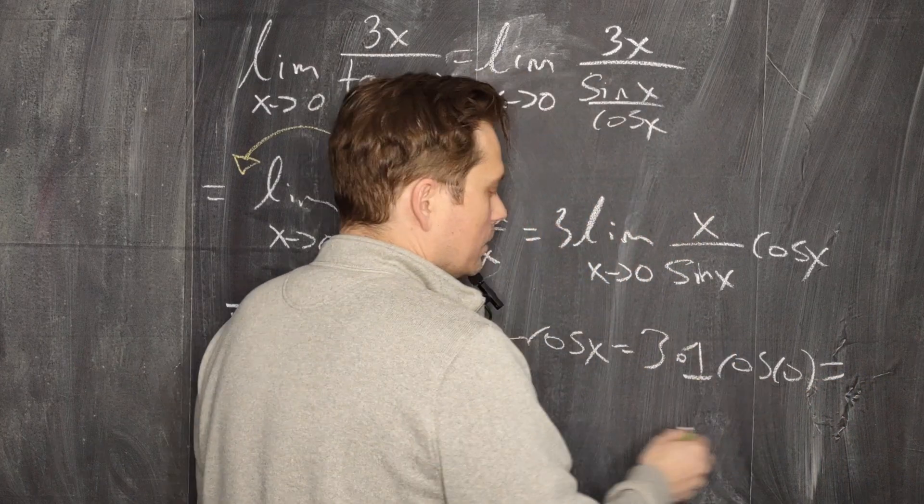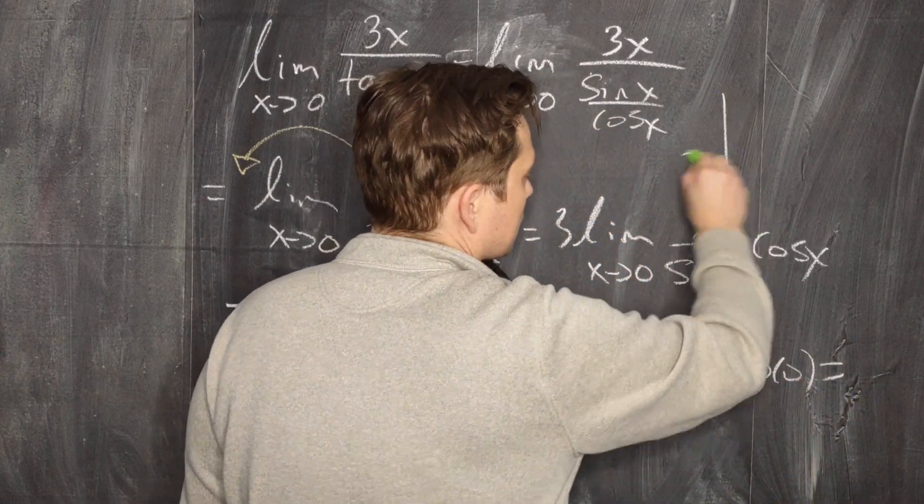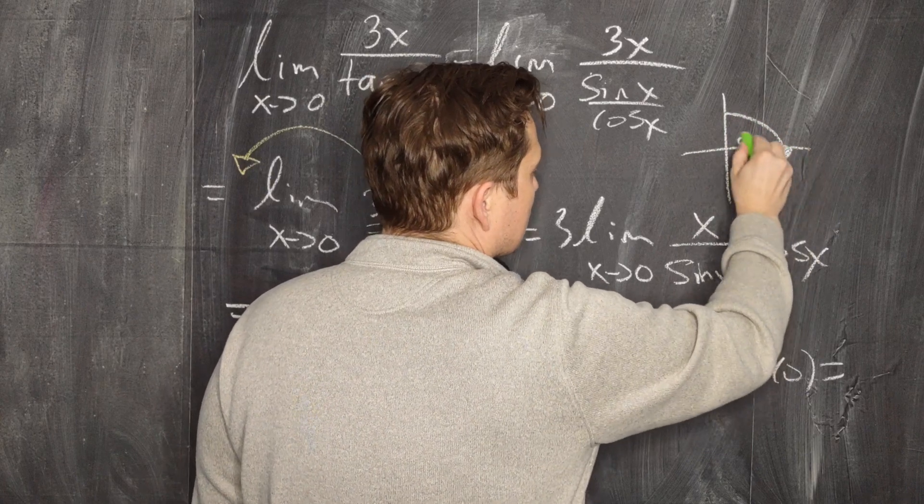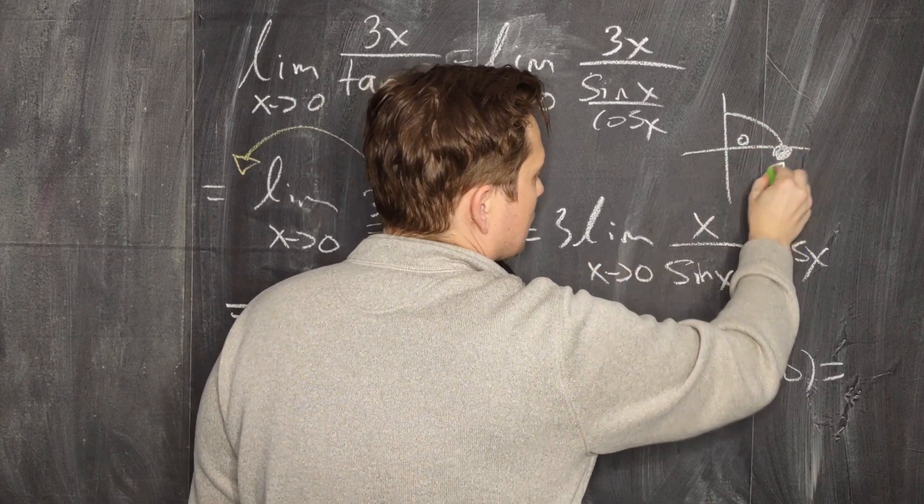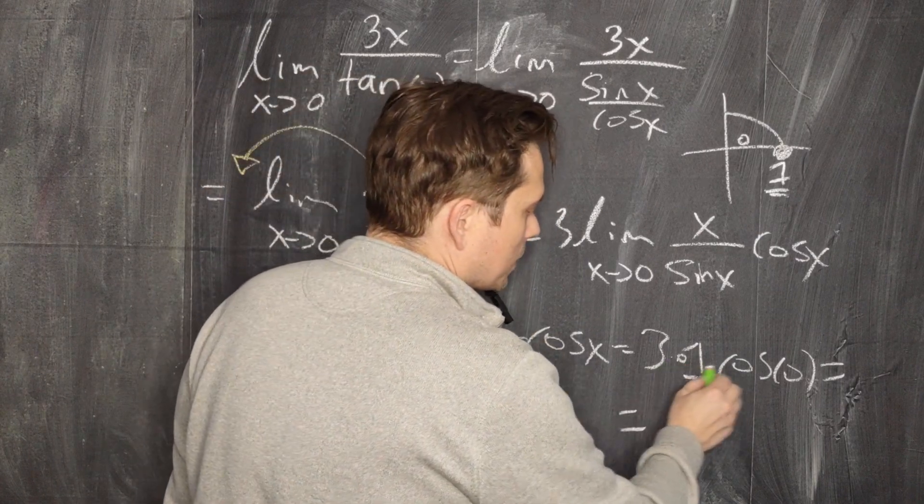So at the end, all of this is going to give you 3 times 1 times cosine of 0. As a reminder, cosine of 0, unit circle, when you are at 0 radians, then the x coordinate is 1. That's the value of the cosine of 0 radians.